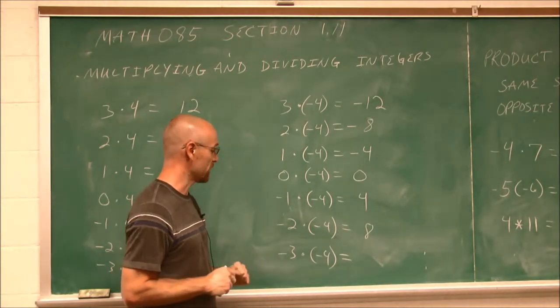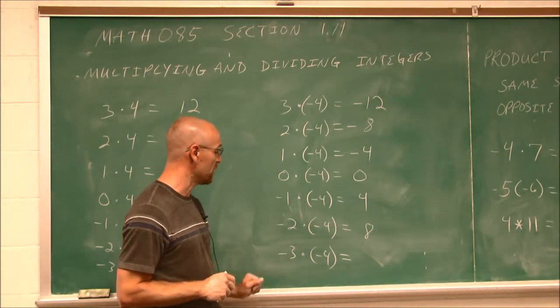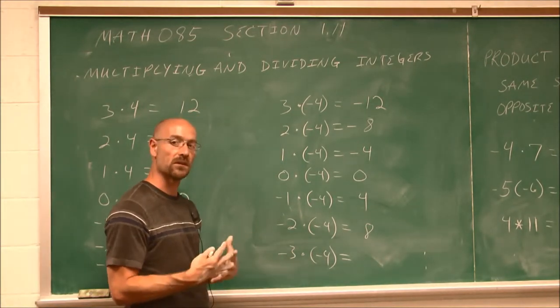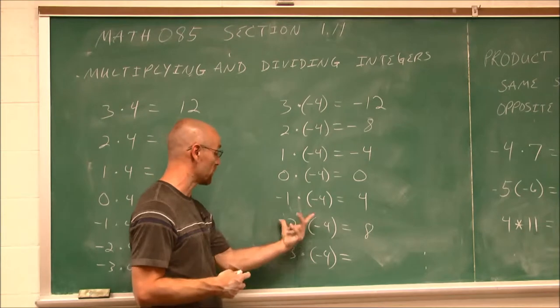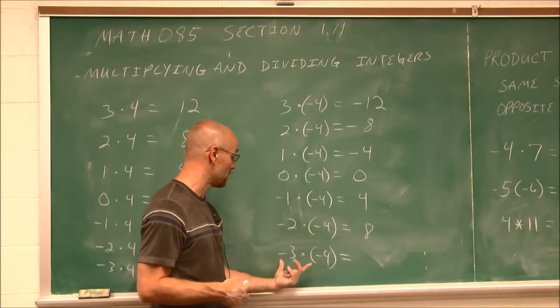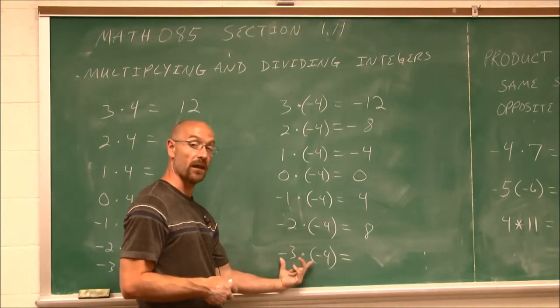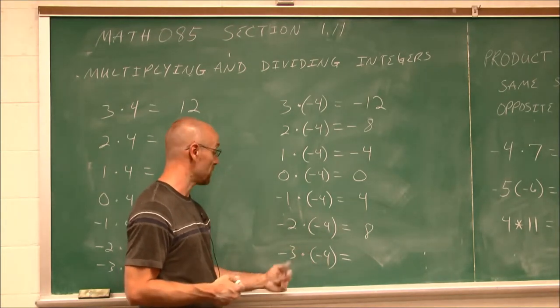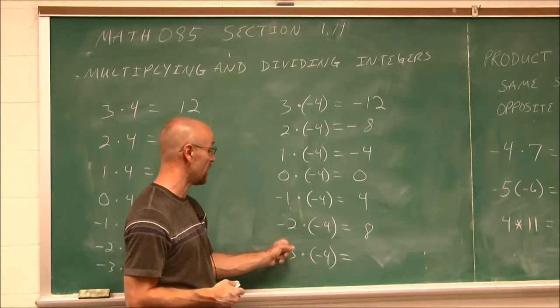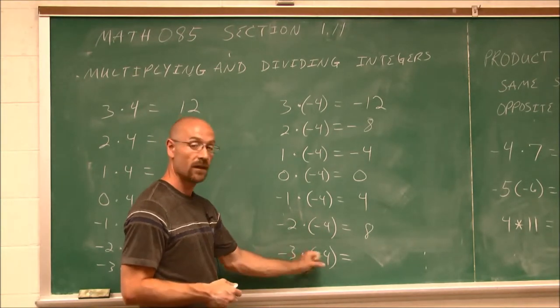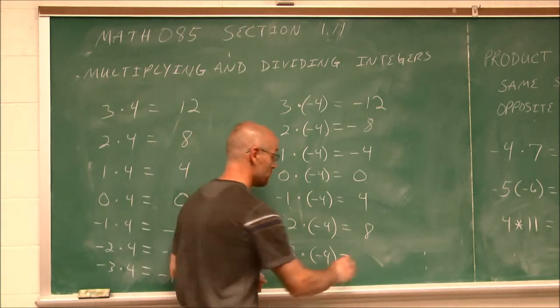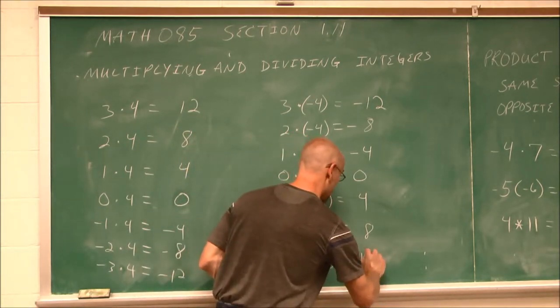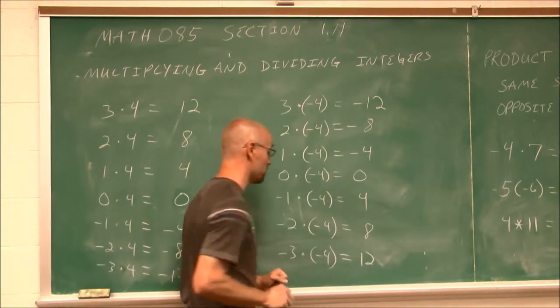This can be confusing, but if we just keep in mind: if we're multiplying two numbers, two negatives gives us a positive, because it's the opposite of negative. The opposite of negative is a positive.